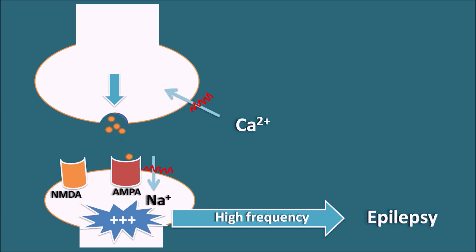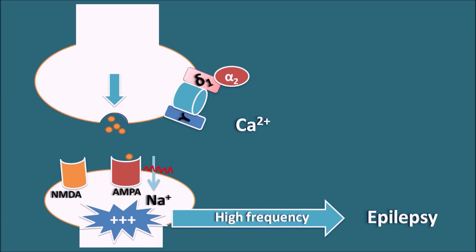Now let us see how Gabapentin acts in this context. Calcium enters the presynaptic membrane through ion channels equipped with different subunits — a gamma subunit, a delta-1 subunit, and an alpha-2 subunit. The delta-1 subunit is connected with the alpha-2 subunit. When this alpha-2 delta-1 subunit is activated, it activates the alpha-1 subunit, which associates with other subunits to form a pore through which calcium enters.